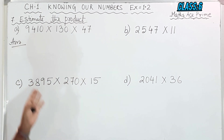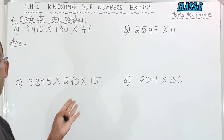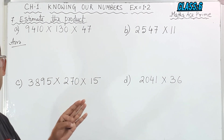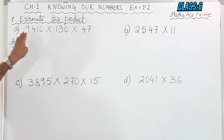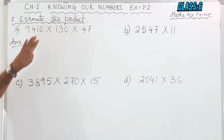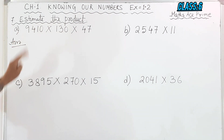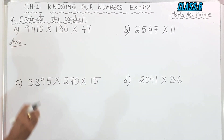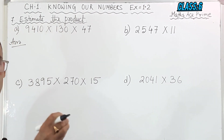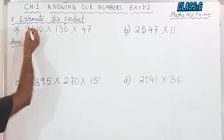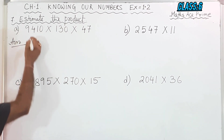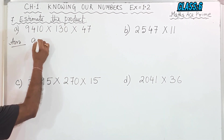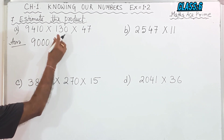If the digit is 5 and above — that is 5, 6, 7, 8, or 9 — then 1 will be added to the next digit. But since it is 4, which is 4, 3, 2, 1, or 0 — less than 5 — so 9 will become 9,000 only.